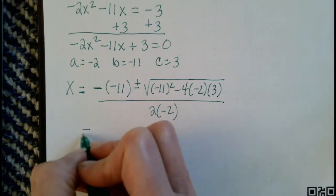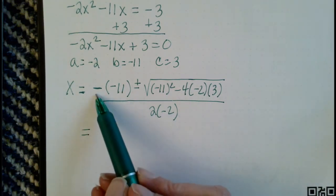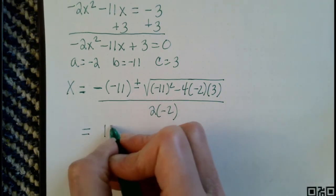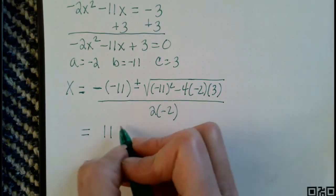So just a reminder here, before I flip over to Desmos, that negative negative is positive 11, plus or minus.